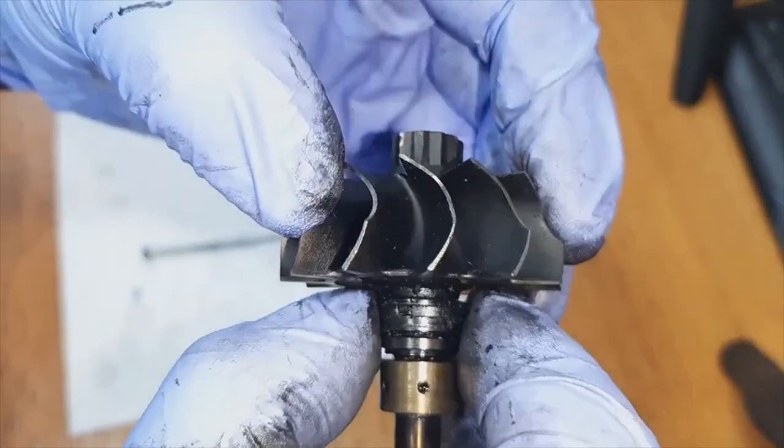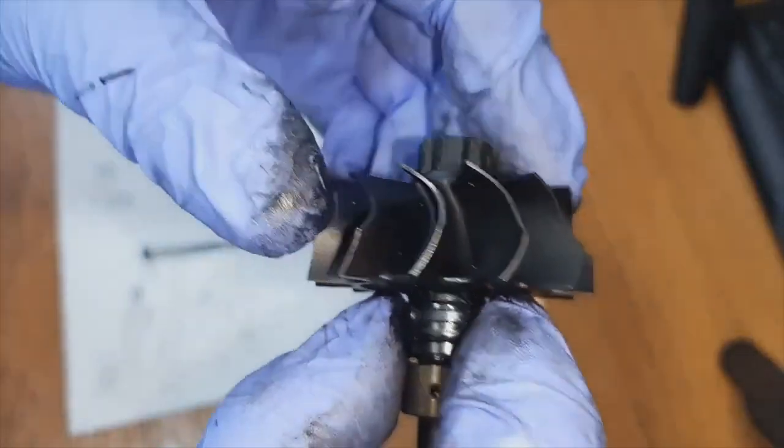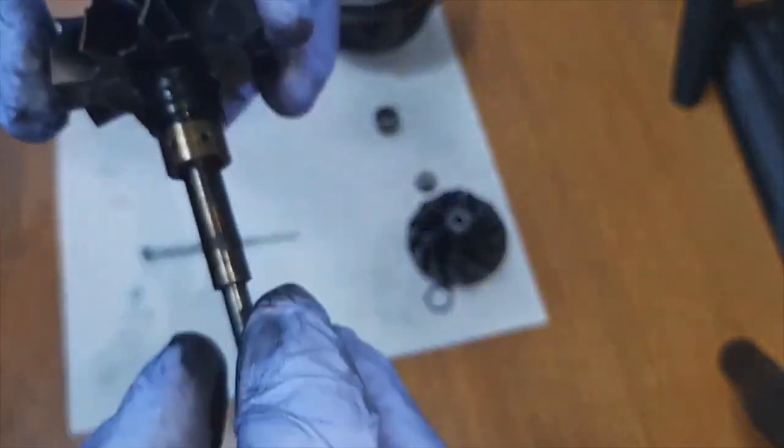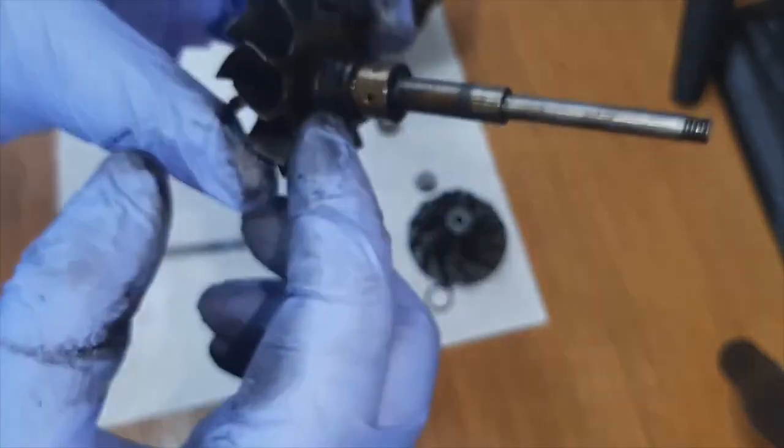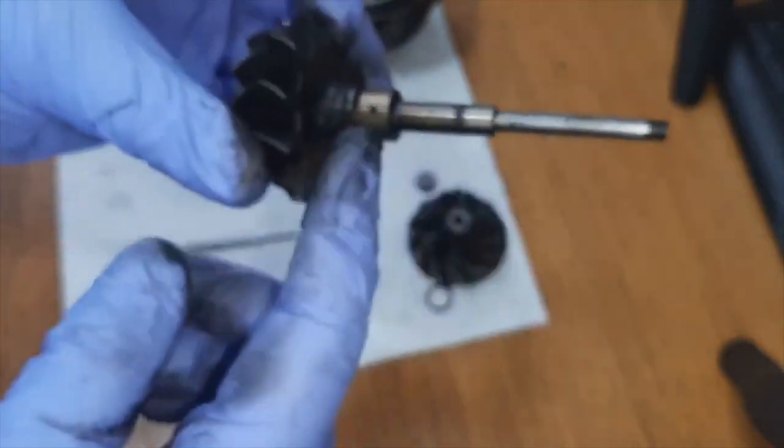Over time this part wears out and then the oil little by little leaks out of the turbine shaft. Part of that oil reaches the turbine and burns through the exhaust, and another part reaches the compressor propeller. From there, as it passes to the intake, it dirties the intercooler and others.